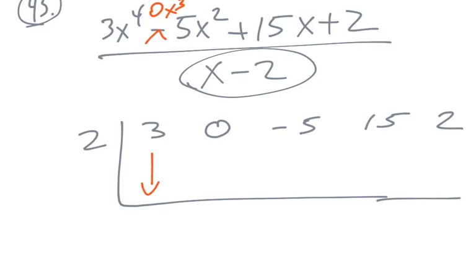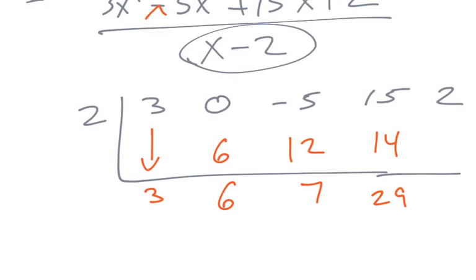So synthetic is you bring the first value down, and you multiply 2 times 3 is 6, and then we add and repeat. So 2 times 6 is 12, 12 minus 5 is 7, 2 times 7 is 14, 14 plus 15 is going to give me 29, 29 times 2 is 58, 58 plus 2 is 60.